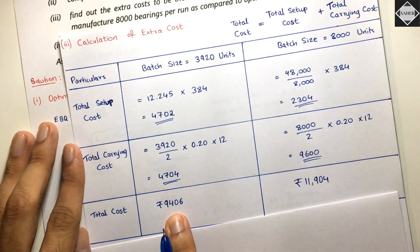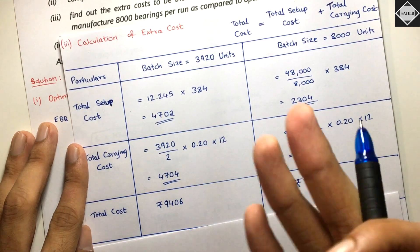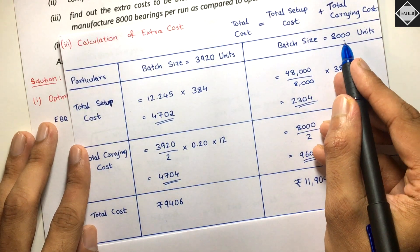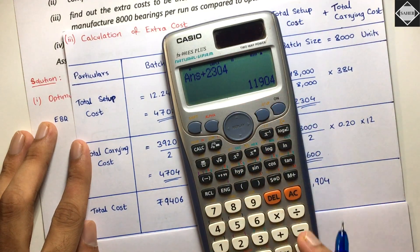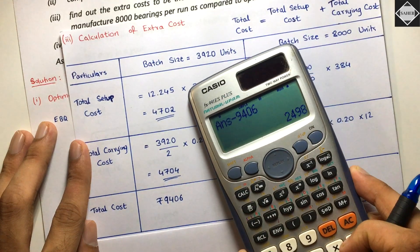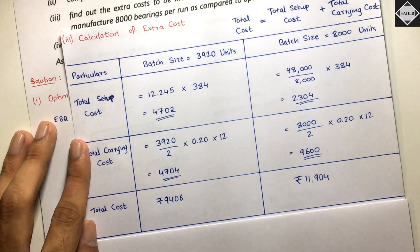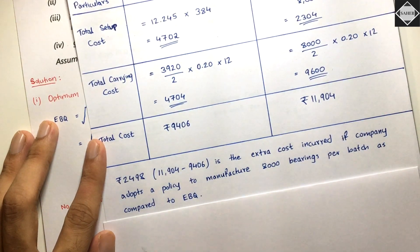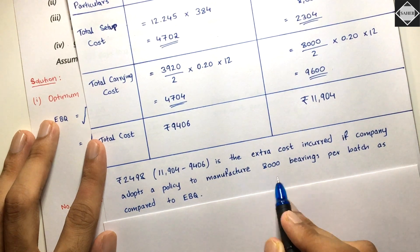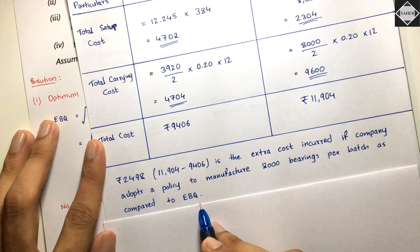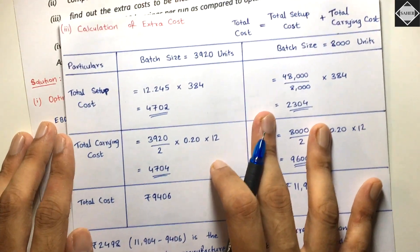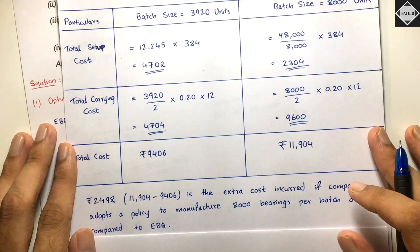The EBQ policy total cost (₹9,406) is lower than the 8,000-unit policy total cost (₹11,904), because EBQ is the best policy. Extra cost if company adopts the 8,000-unit policy = ₹11,904 − ₹9,406 = ₹2,498. So ₹2,498 is the extra cost incurred if the company manufactures 8,000 bearings per batch instead of the EBQ.